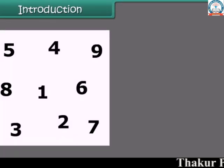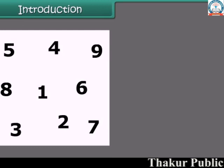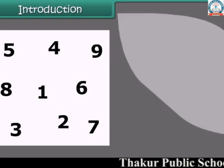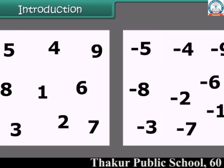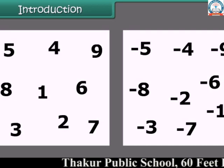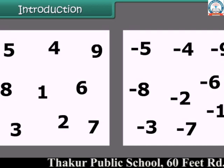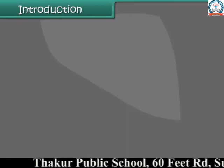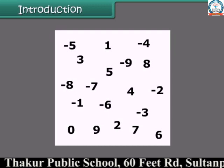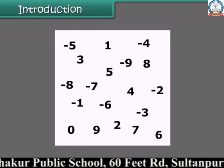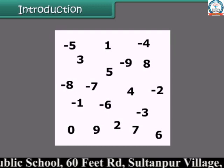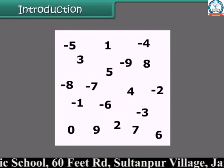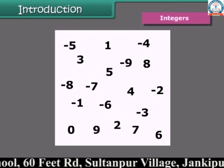Students, look at these numbers. These are the whole numbers. Now look at these numbers — these are the negative numbers. But what do we call a bigger collection of numbers which contains whole numbers and negative numbers? Those numbers are called integers.